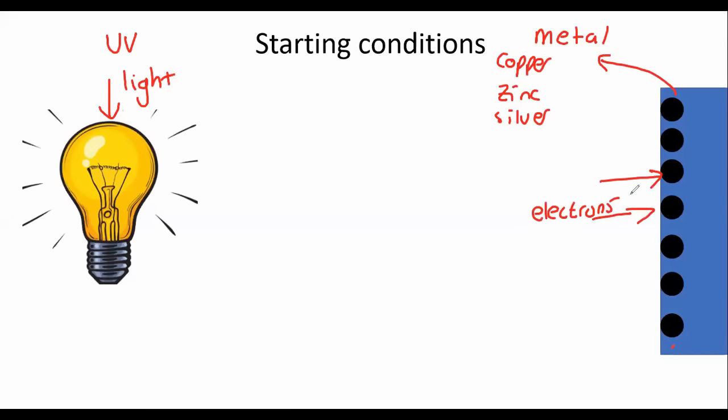And so that is the starting condition for this chapter. We need light and we need a metal. And what we're going to do, it's quite cool. We're going to take the light and we're going to shine the light on the metal. And we will be able to do something by shining the light on that metal.